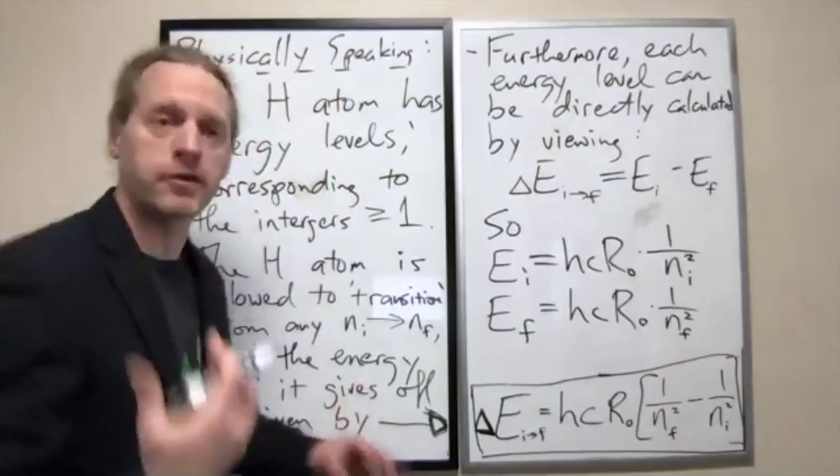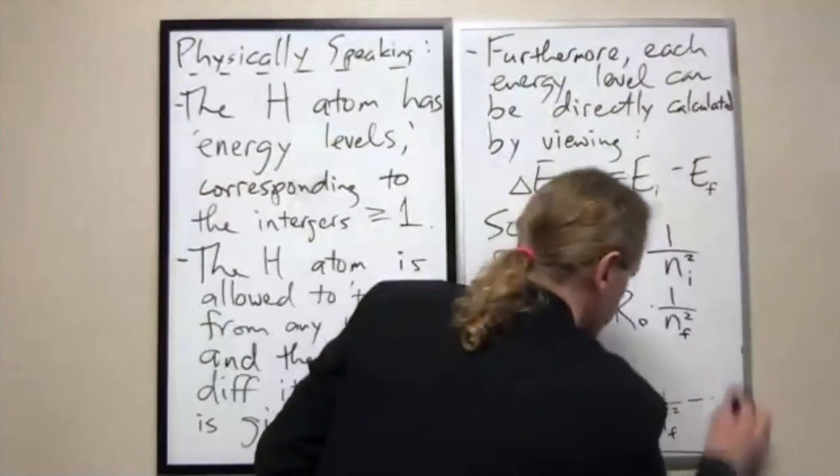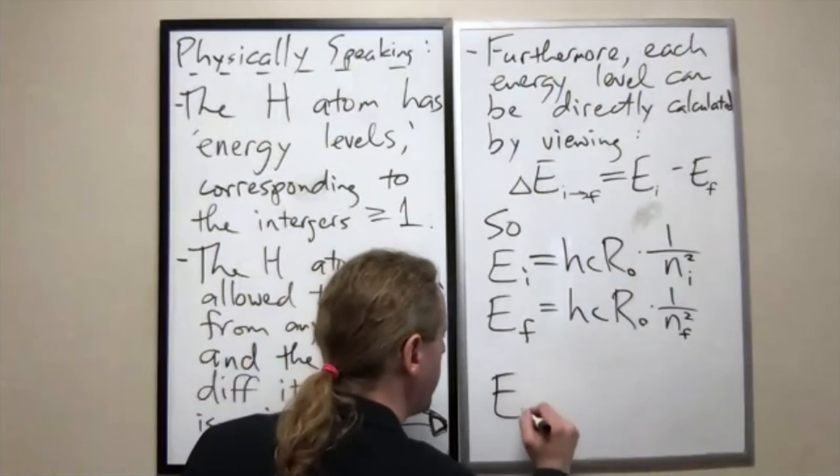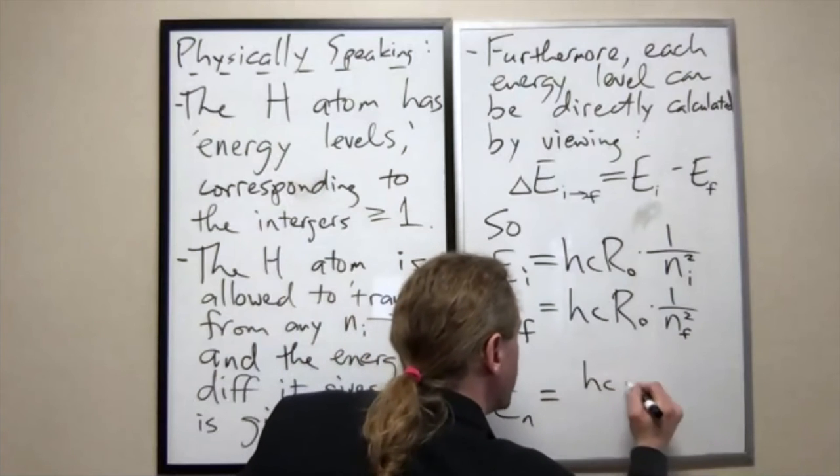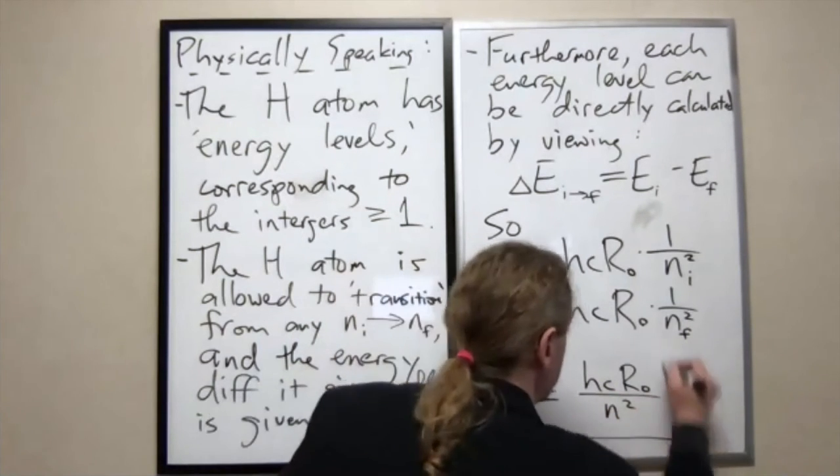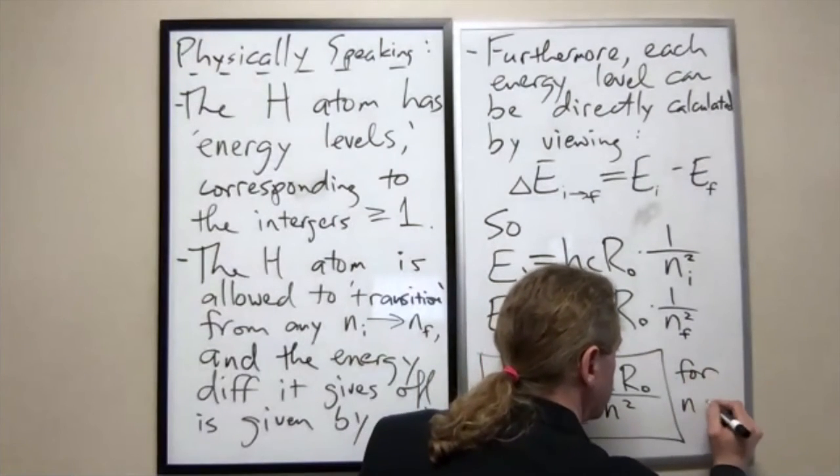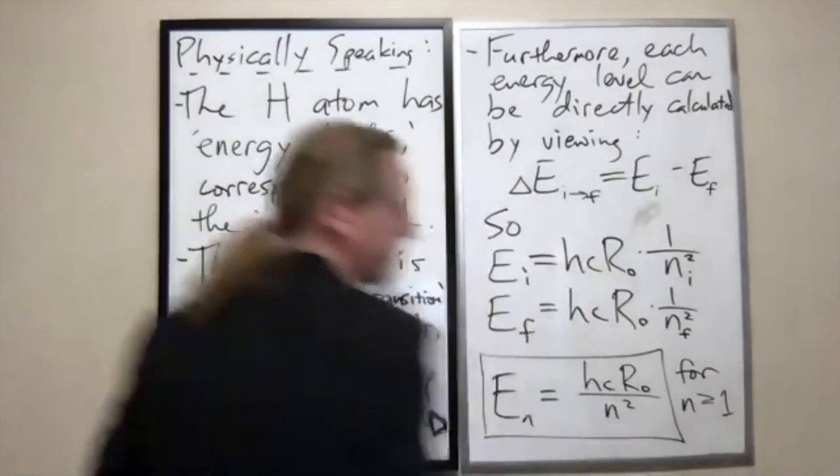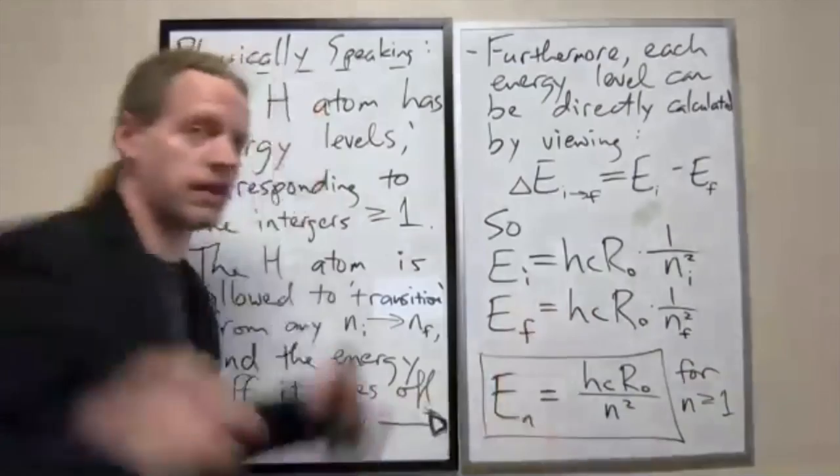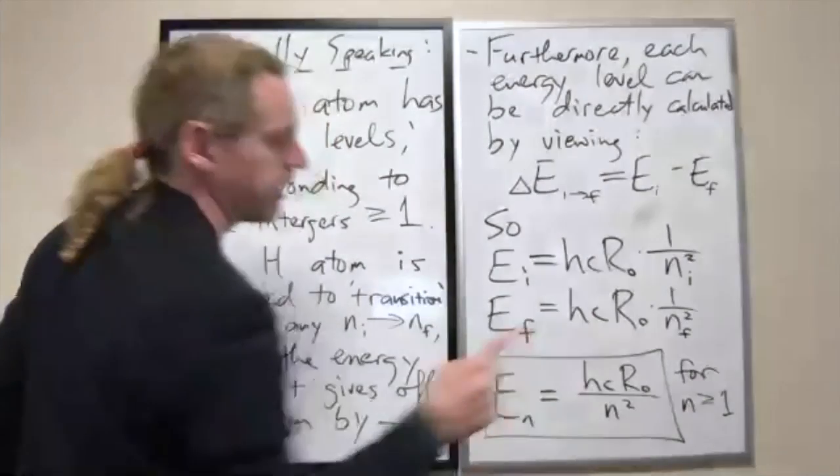Or arbitrarily speaking, you can just write any energy level as E sub N equals hcR0 over N squared. And again, that's specifically for N greater than or equal to 1. And this is the Bohr formula. These are the specific energy levels of the hydrogen atom.